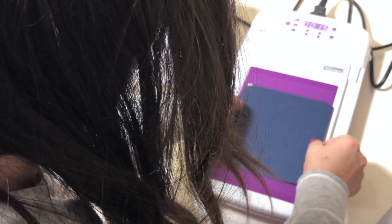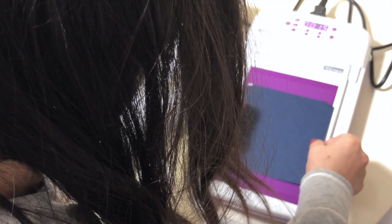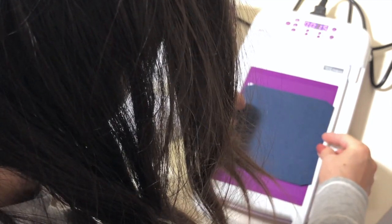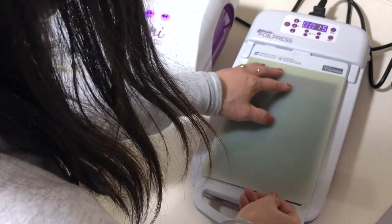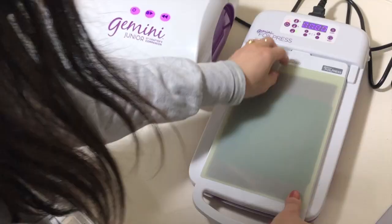When the timer goes off I transfer the entire foiling platform with top plate to the Gemini Junior which finishes the foiling and debossing.